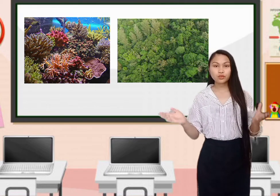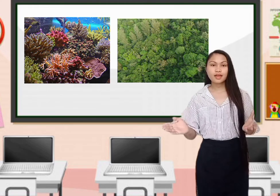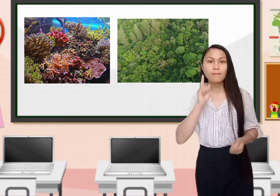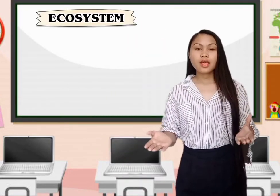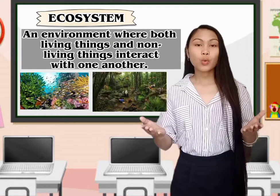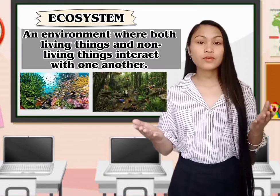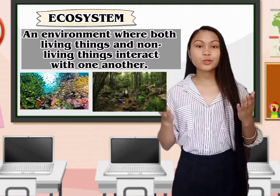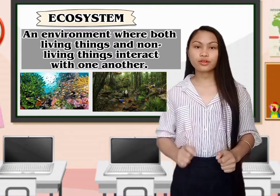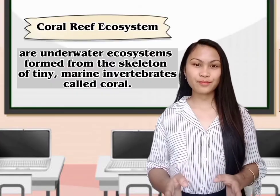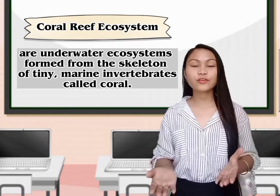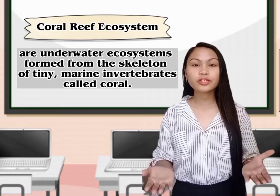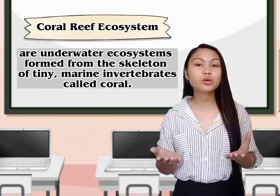These pictures show us an ecosystem. Do you know what is an ecosystem? An ecosystem is an environment where both living things and non-living things exist and interact with one another. The coral reef ecosystem is formed from the skeleton of tiny marine invertebrates called corals.